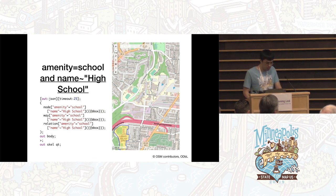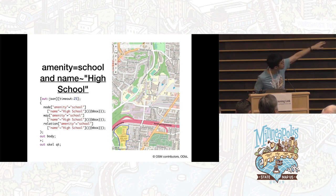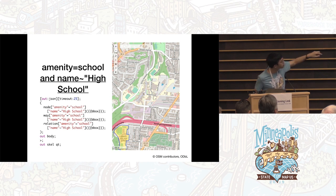Here I'm doing a regular expression search, and you can see how the tilde in the wizard query language translates to a tilde in those three lines in the Overpass QL — so instead of 'name equals whatever', it's 'name tilde high school'.